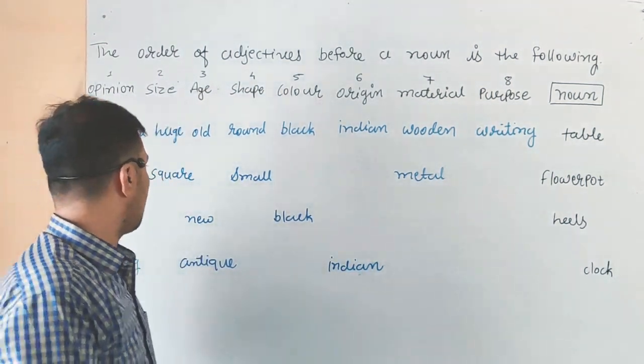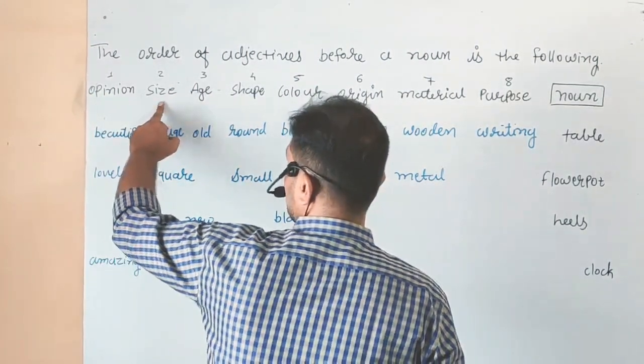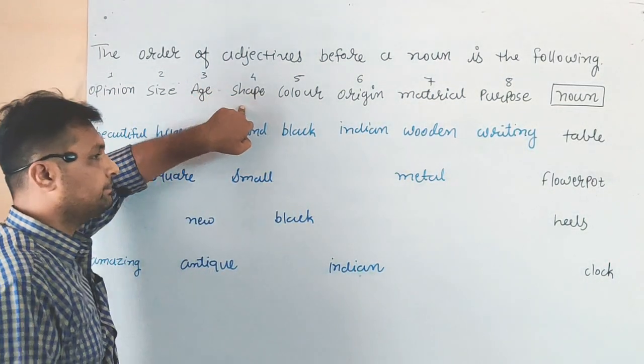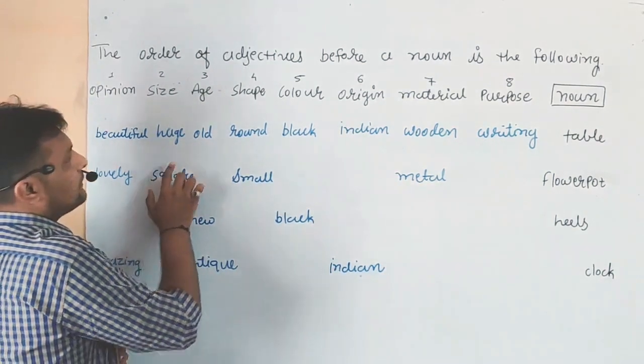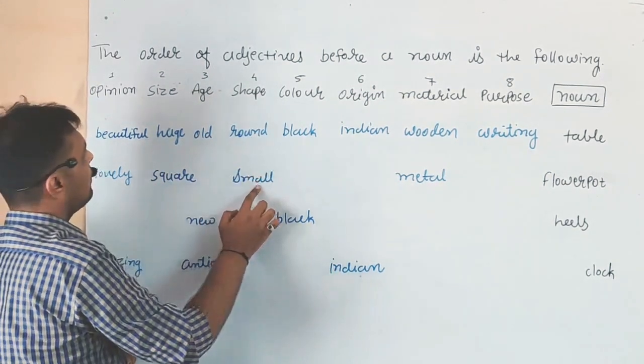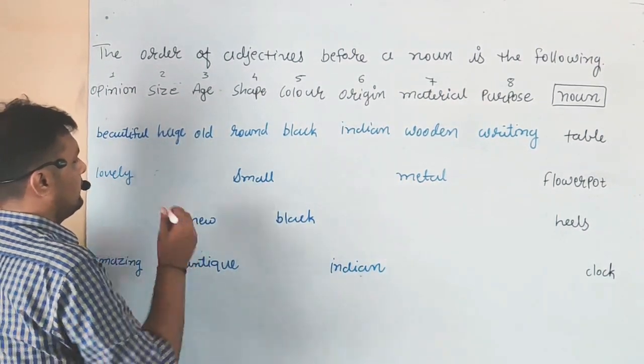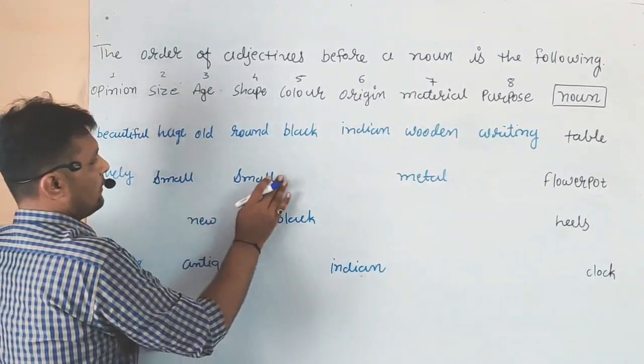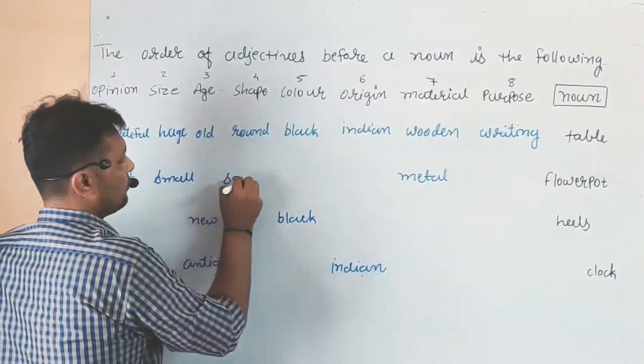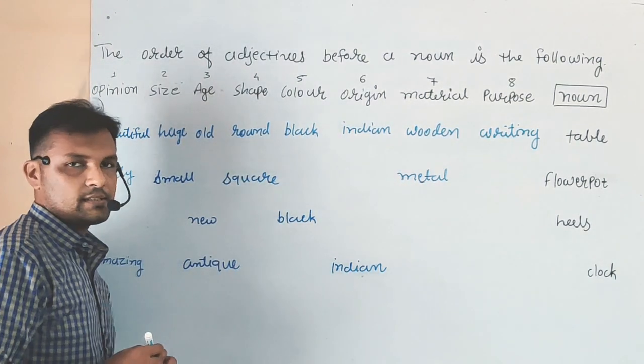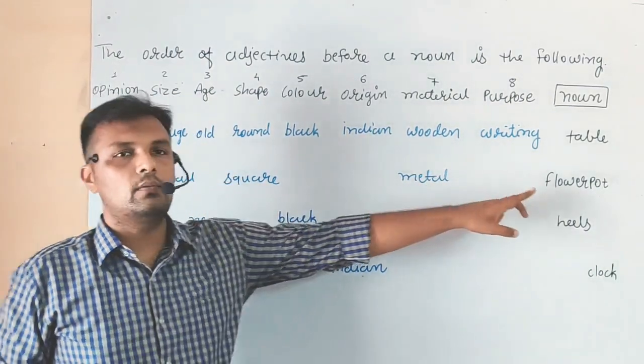Let's see another example. Lovely, Opinion, correct. Square, Size... Small is in Size. There are some errors. Square is in Shape and Small comes in Size. So the correct adjective order is: Lovely, Small, Square, Metal, Flowerpot.